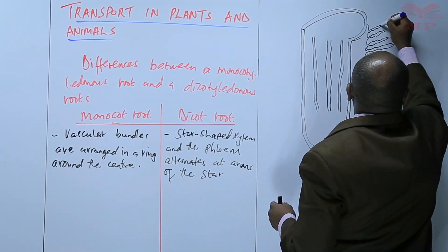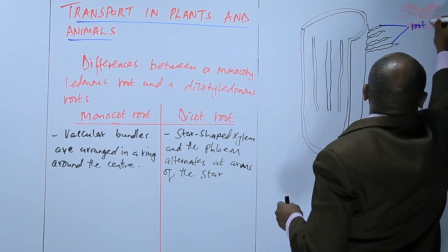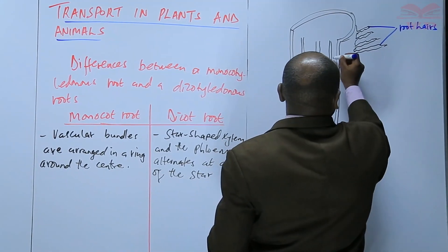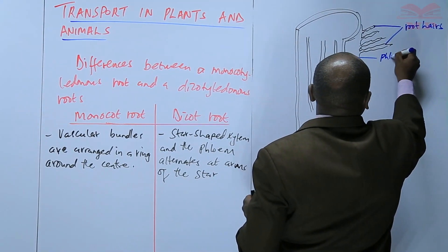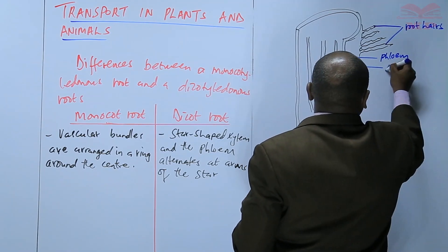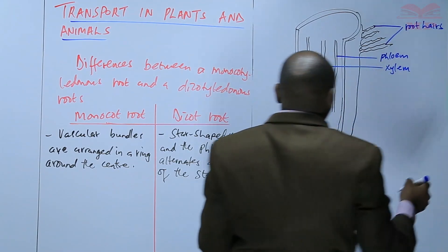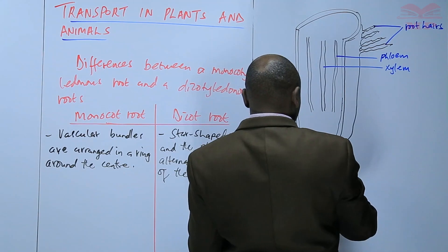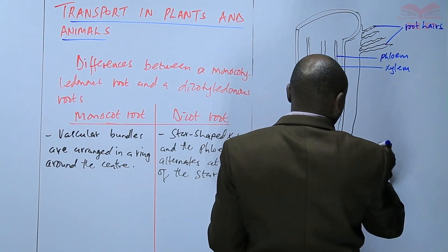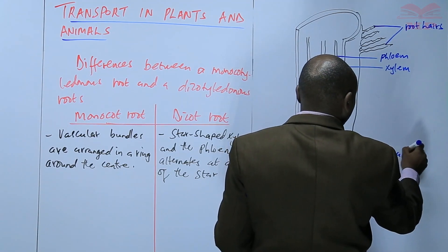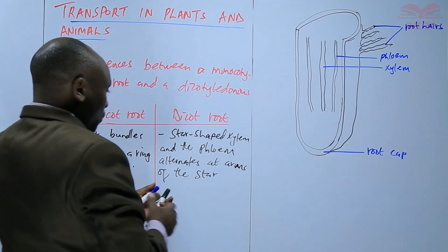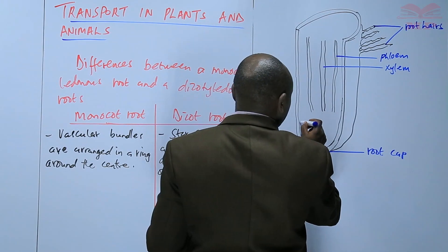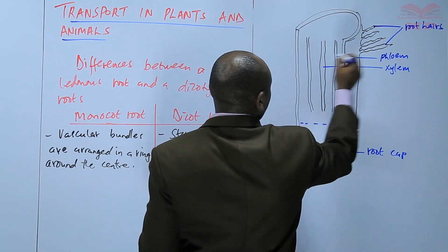In a longitudinal section, we have the root hairs. On the outside we have the phloem, and then inside we have the xylem. At the very tip of the roots, we have the root cap. And then we can divide this into a number of zones. The first zone is at the tip, and then we have another zone above that.